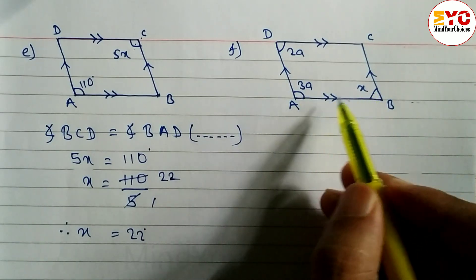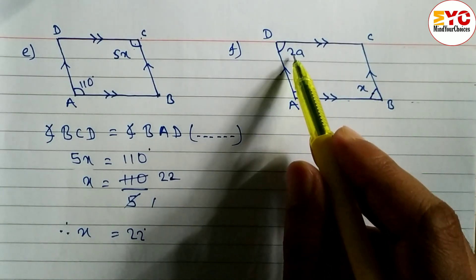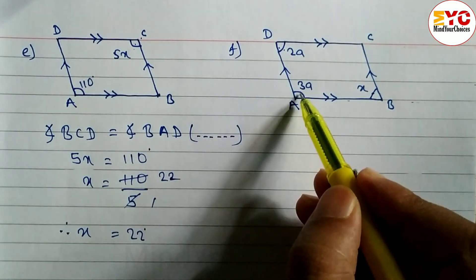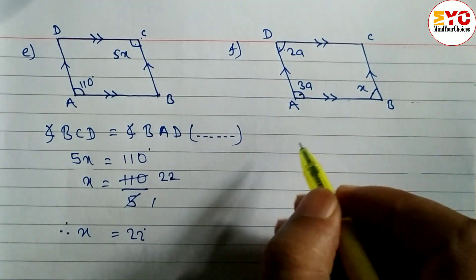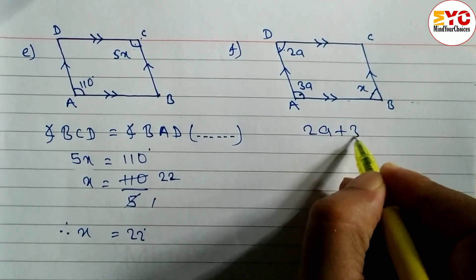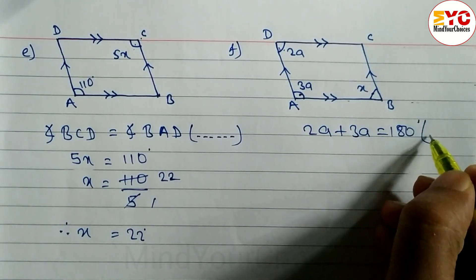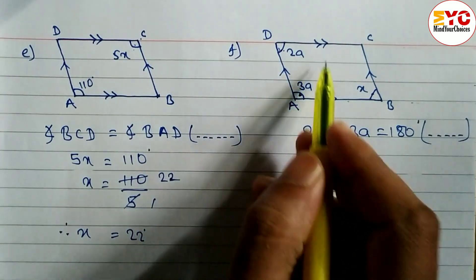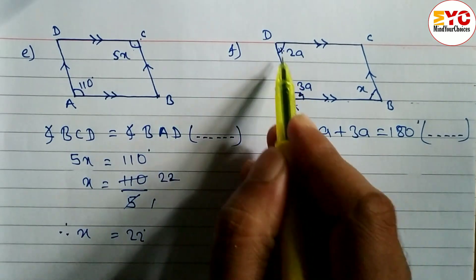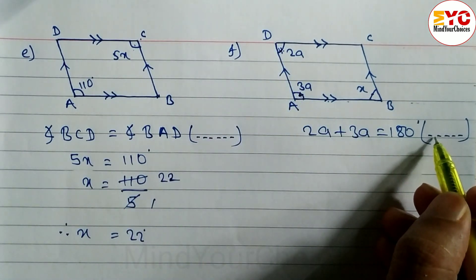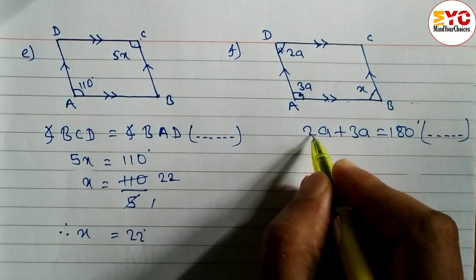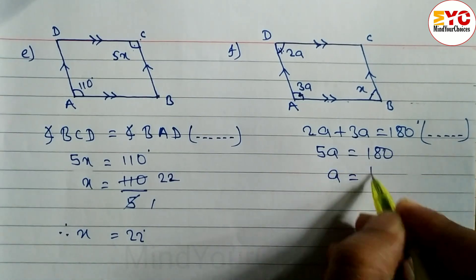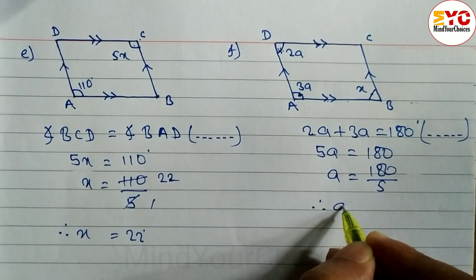Now look at question number f. Here also we have to find the value of x, but before finding x we have to find the value of a, because we can write x plus 2a equals 180 degrees — but a is an unknown variable. So we take the two angles involving a: 2a plus 3a equals 180 degrees. The reason is that they are co-interior angles, both inside the two parallel lines. So 5a is equal to 180.